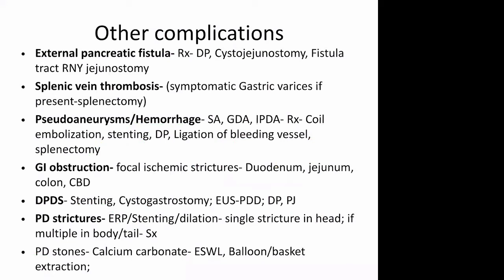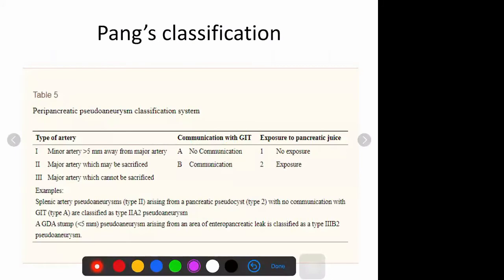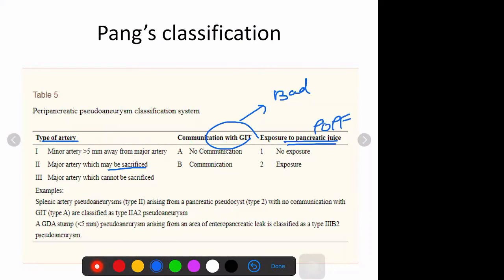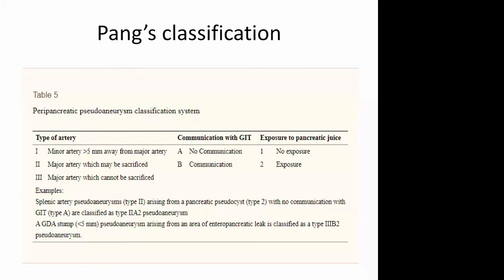For pseudoaneurysms, there is something called the PANS classification, especially in relation to post-pancreatectomy surgeries like Whipple's or DPPHR. It is used to prognosticate and type the pseudoaneurysms. It is classified according to the type of artery - whether minor or major - and whether the major artery can be sacrificed or not, and whether the pseudoaneurysm has communication with the GIT. If there is anastomotic dehiscence causing a pancreatic fistula associated with a pseudoaneurysm, or if there is a concomitant post-operative pancreatic fistula (POPF), the prognosis is very bad.